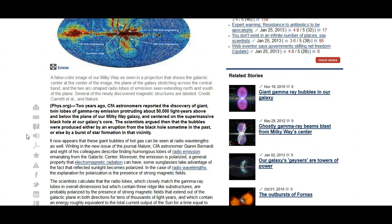Writing in the new issue of the journal Nature, CFA astronomer Gianni Bernardi and eight of his colleagues described finding humongous lobes of radio emission emanating from the galactic center. Moreover, the emission is polarized, a general property that electromagnetic radiation can have.